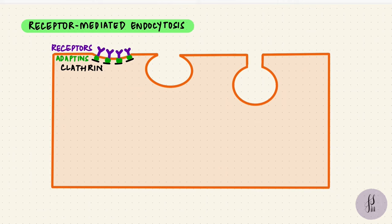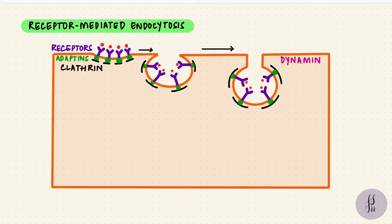So when the ligands bind to the receptors, the vesicle is going to form. It's more specific than fluid phase endocytosis because a specific receptor is involved. Now as the vesicle forms, there's another molecule called dynamin that's located at the neck of this vesicle.